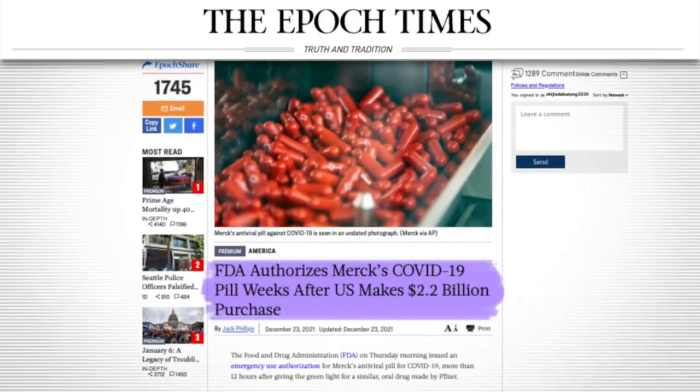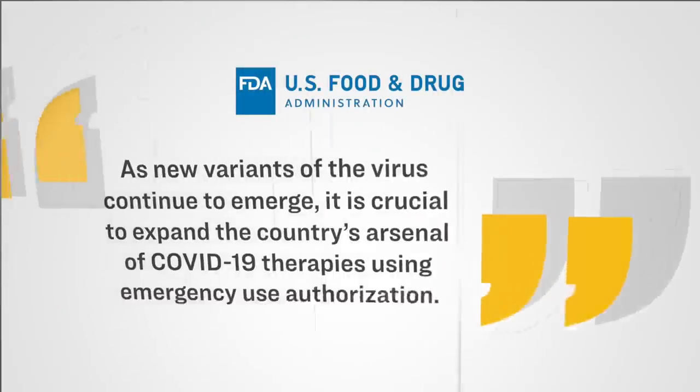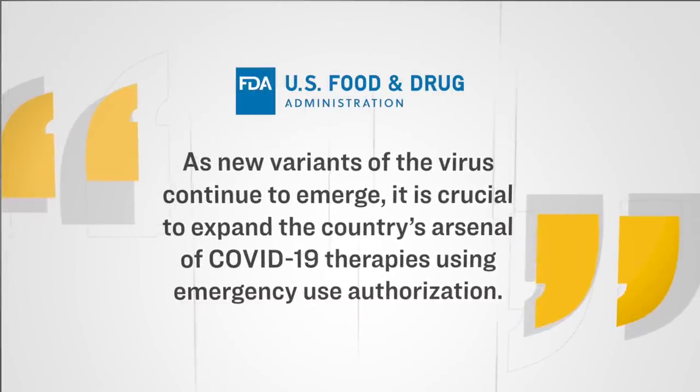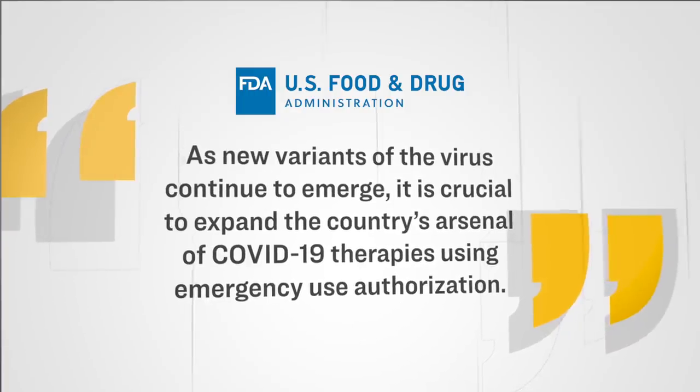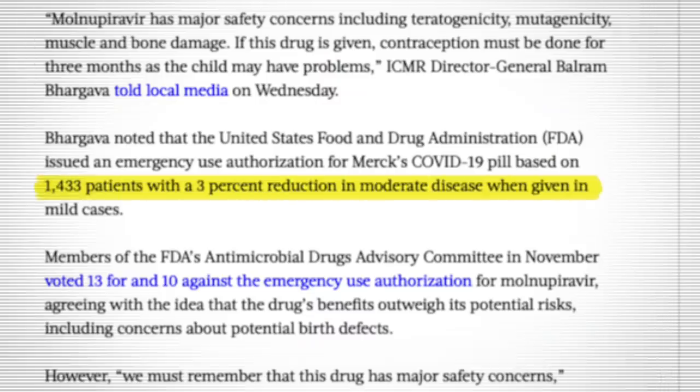In fact, just two weeks ago, they granted emergency use authorization to this Merck pill. Here's what the FDA said in the statement as they issued their approval. As new variants of the virus continue to emerge, it is crucial to expand the country's arsenal of COVID-19 therapies using emergency use authorization. There are actually two things that I believe are worth mentioning regarding this FDA emergency use authorization. The first one is that the FDA based it on 1,433 patients who were treated with this COVID pill, and they reported seeing a 3% reduction in moderate disease when the pill was given in mild cases. The reason I believe that's worth highlighting is that this claim of a 3% reduction in moderate disease is not bad, but it's a significantly lower claim than Merck was making, which is a 50% reduction in hospitalization as well as death.